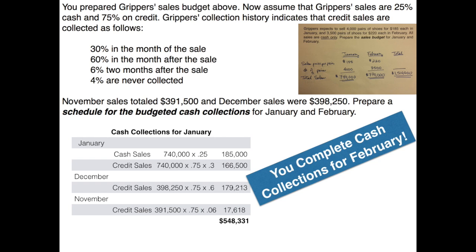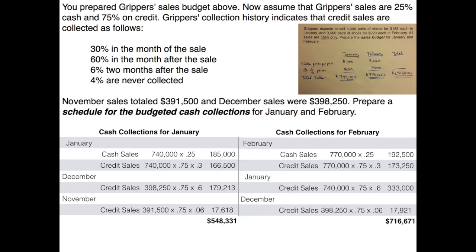Pause your player and see if you can come up with total cash collections for February. The cash collections for February should equal $716,671. This comes from collecting all cash sales from February, plus 30% of credit sales from February, plus 60% of credit sales from January, plus 6% of credit sales from December — totaling $716,671.